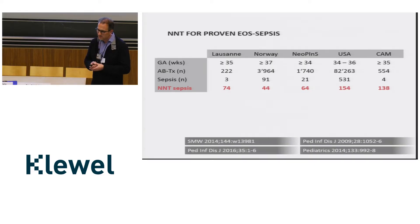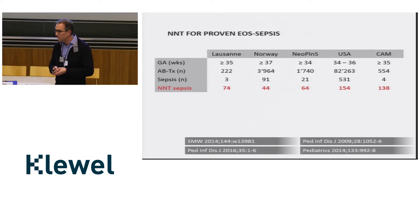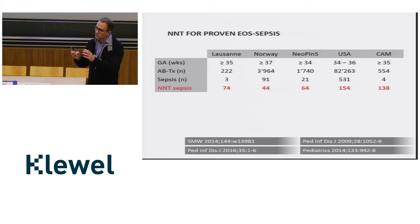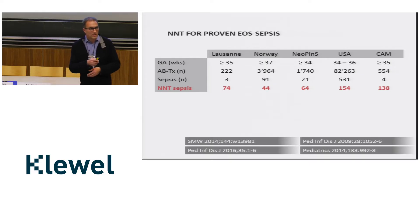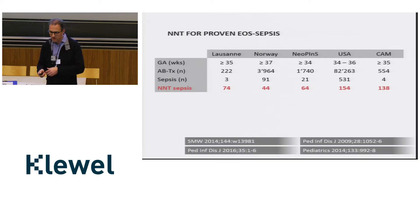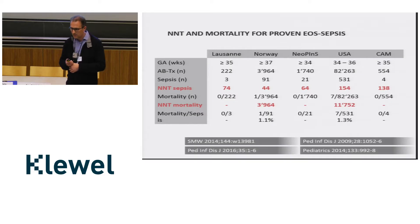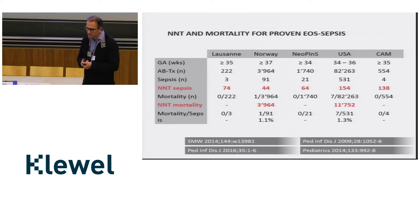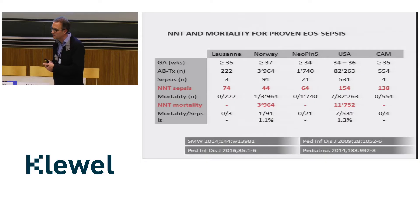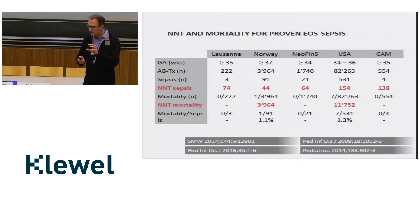In the United States, there are publications with numbers needed to treat of 154, and for a special risk situation like chorioamnionitis the number needed to treat was 138. Of course, we can say sepsis is dangerous so we must treat many babies to prevent mortality — but what about the mortality? In Lausanne there were none. In the Neopin study there was no sepsis-related mortality. In Norway one baby died of GBS sepsis. In the USA, even with chorioamnionitis, the numbers were very low — you have to treat more than 11,000 babies to have one who dies from sepsis. We don't want dead babies, but we have to think: are these numbers reasonable?